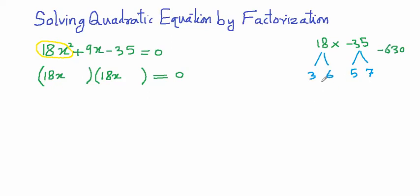We make suitable pairs from these four numbers. If we multiply 3 with 7, we get 21, and if we multiply 6 with 5, we get 30. The product of 21 and 30 is 630, and if we subtract them, we get 9.